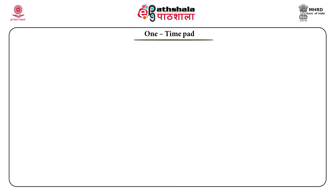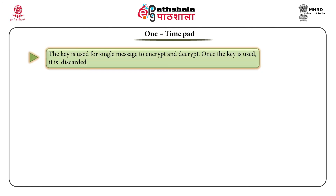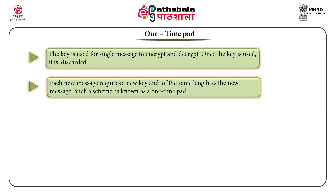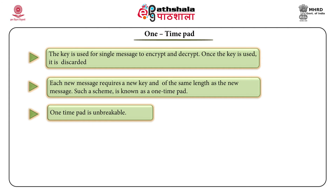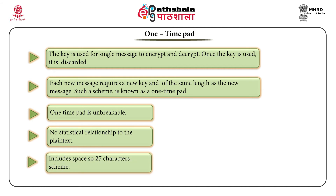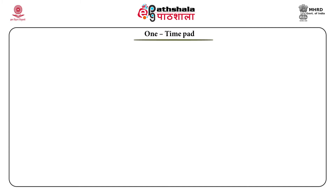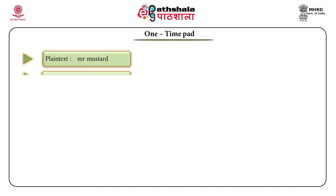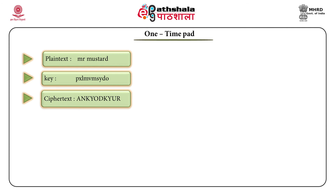Then comes the one-time pad. The key is used for a single message to encrypt and decrypt. Once the key is used, it is discarded. For each new message, get a new key of the same length as the plain text — this scheme is called the one-time pad. For example, if the plain text is 'Mr. Mustard', the key is P, X, L, M, V, M, S, Y, D, O, and the ciphertext is A, N, K, Y, O, D, K, Y, U, R.